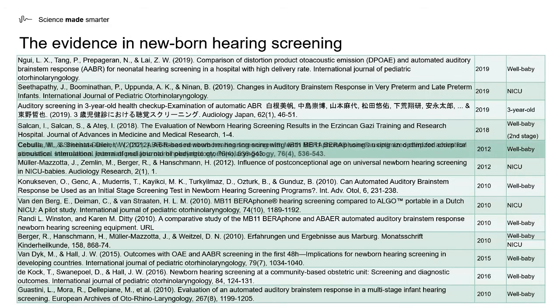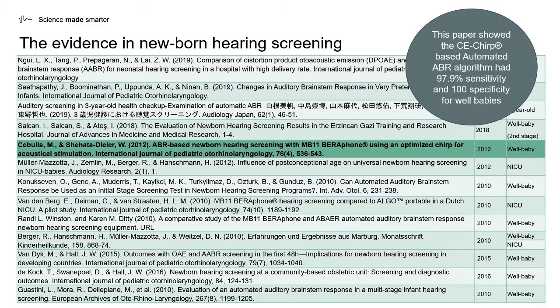The first study I want to talk about is the CEDBULA study, which was performed in 2012. What this paper showed was that based on their screening results, a CE CHIRP-based automated ABR algorithm had a 97.9% sensitivity and 100% specificity for well babies.